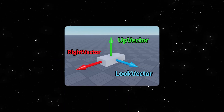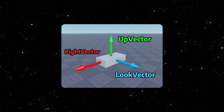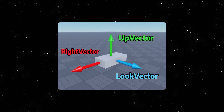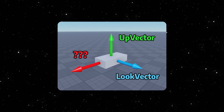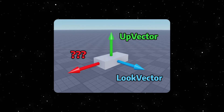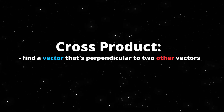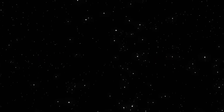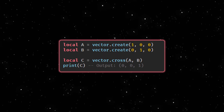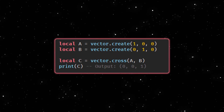Now let's talk about the cross product. The look vector is the direction a CFrame is facing, the right vector is the direction to the right side, and the up vector is the direction pointing to the top of the CFrame. If we have an up vector and a look vector but are missing the right vector, that's where cross comes in — it allows us to find the direction perpendicular to two other directions.